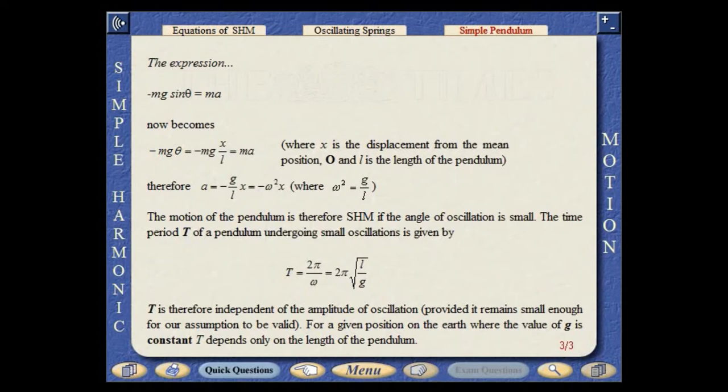The time period, T, of a pendulum undergoing small oscillations is independent of the amplitude of oscillation. For a given position on the earth, where the value of G is constant, T depends only on the length of the pendulum.